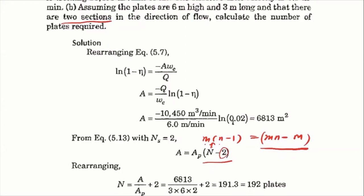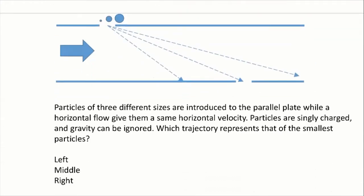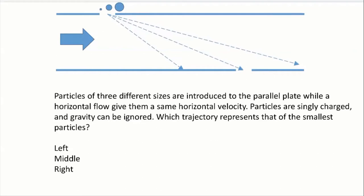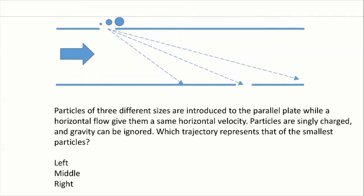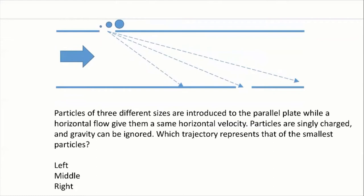A few weeks back, due to technical issues, I introduced methods to measure particle size distribution. I specifically mentioned a method using the electrostatic field — a device called the DMA. What happens is we use the movement of particles to classify them based on their size, which is related to migration velocity, w. In the ESP, we can calculate w from experience tables.